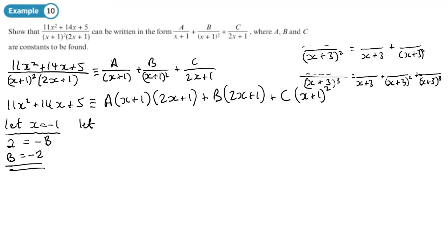Then we'll make x equal to negative 1 half. If we make x equal to negative 1 half, we will end up with 11 on this side, on the left-hand side, and that will equal 2a plus c. So slightly different to before. We don't just end up with a single number or a single letter because of these repeated factors.